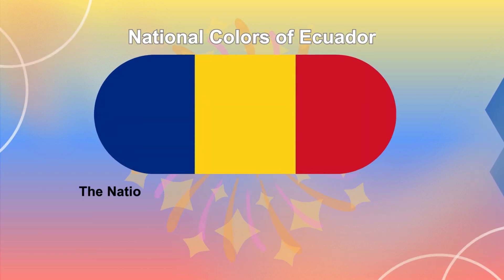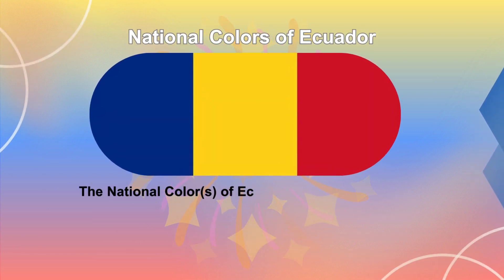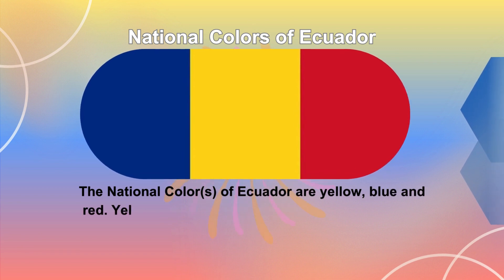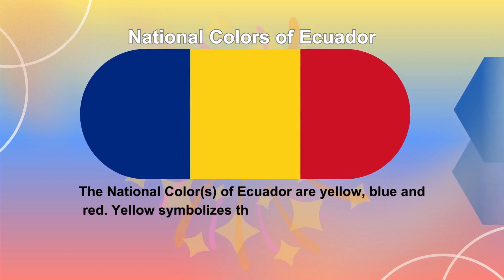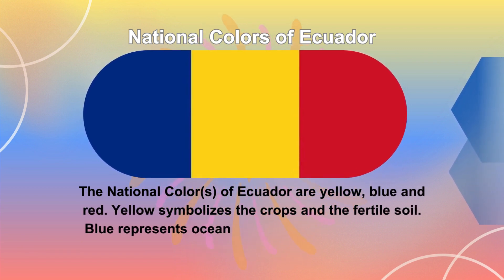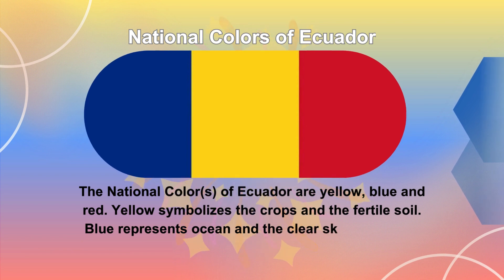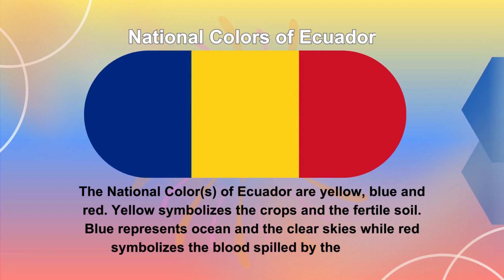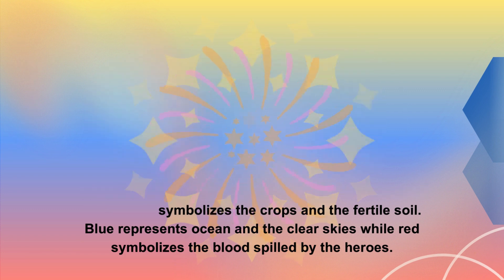The national colors of Ecuador are yellow, blue, and red. Yellow symbolizes the crops and the fertile soil. Blue represents the ocean and the clear skies, while red symbolizes the blood spilled by the heroes.